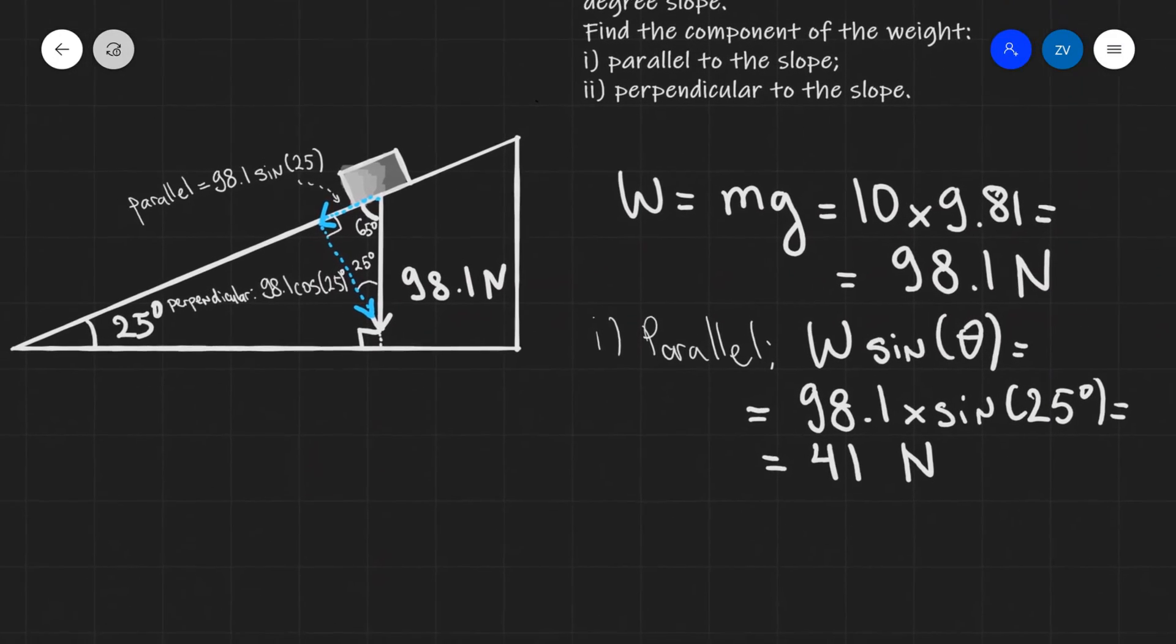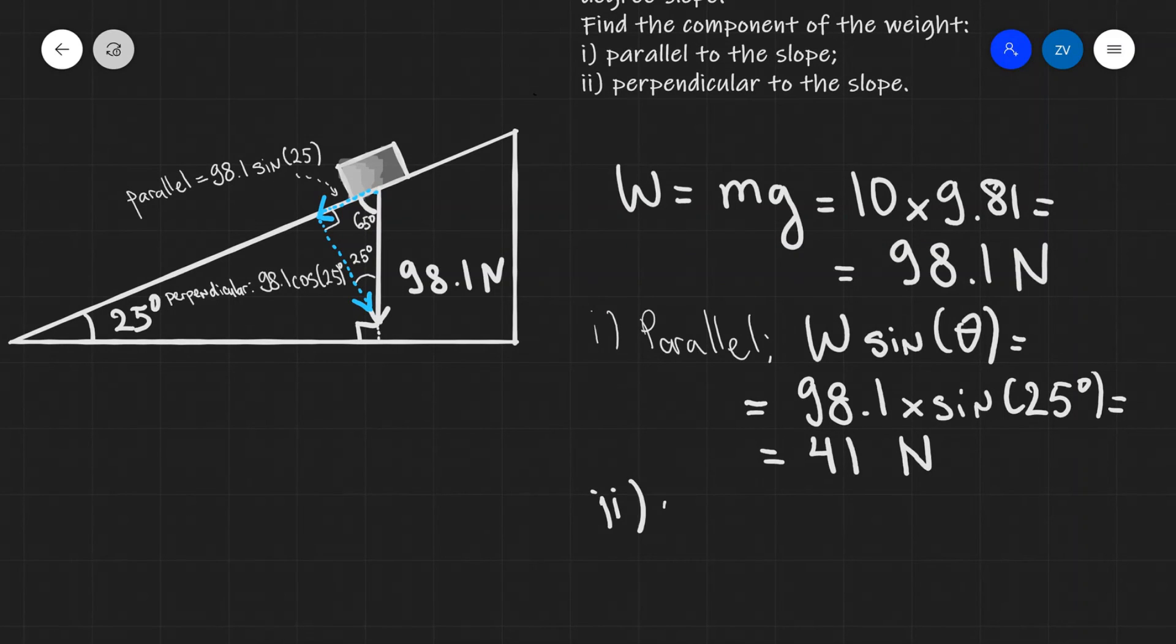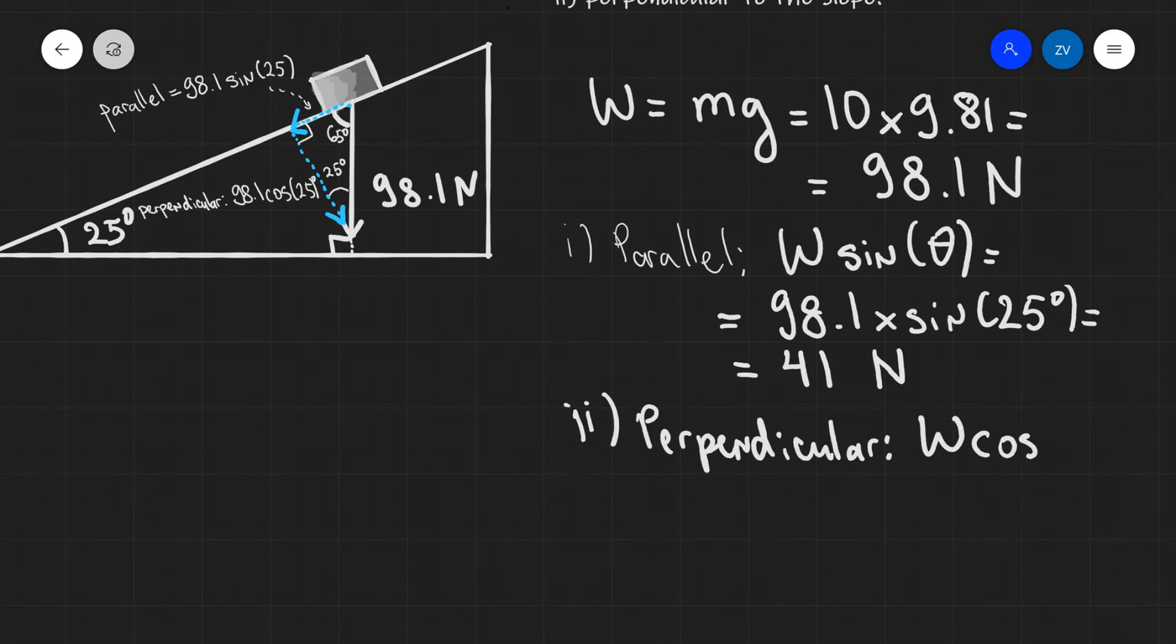Let's have a look at the perpendicular component. So for part two which is the perpendicular component, this will be the weight times the cosine of the angle. The weight is 98.1 times cosine of 25 degrees, and up to two significant figures this will be 89 newtons. So 89 newtons are going to be acting perpendicularly to the slope and 41 newtons are going to be acting in a direction parallel to the slope.